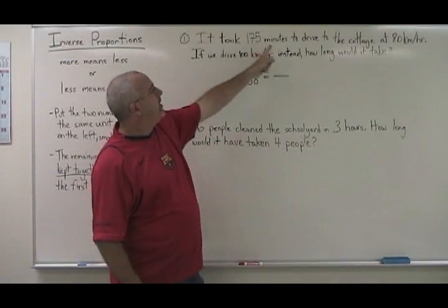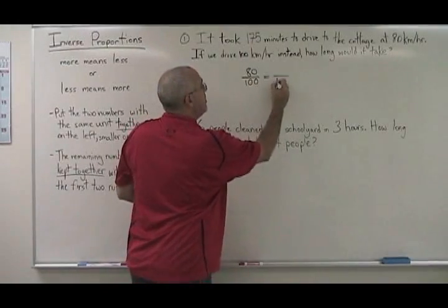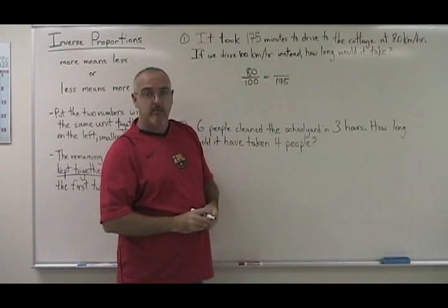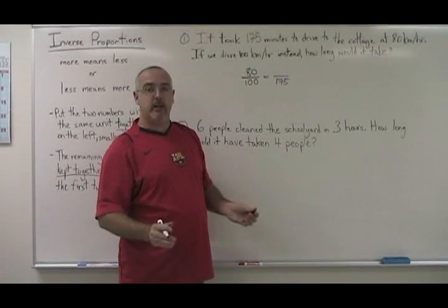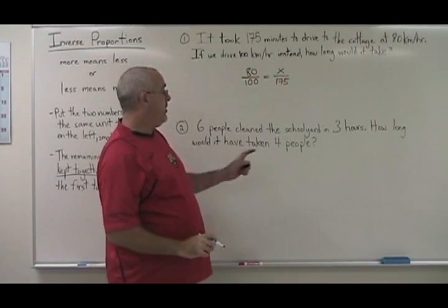So therefore, the 175 goes with the 80 in the problem. So because it is inverse, we put it on the bottom, so it is not together on top with the 80. Just changing one of the steps. And we put our x in the last remaining place. Let's try it with this problem.